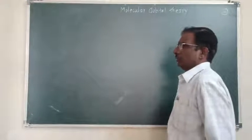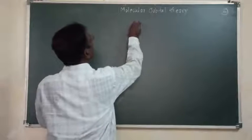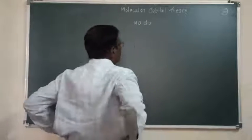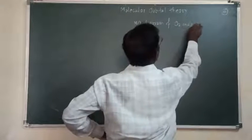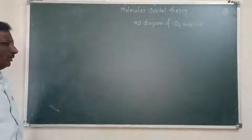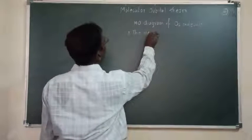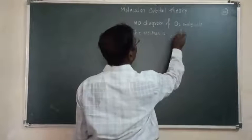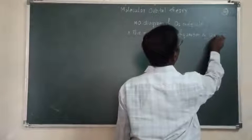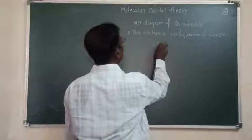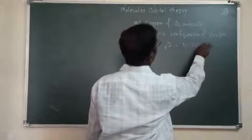Now, the last MO diagram of homonuclear diatomic molecule is that of oxygen — the MO diagram of O2 molecule. First, we have to write the electronic configuration of oxygen. The atomic number of oxygen is 8, and the electronic configuration is 1s2, 2s2, and 2p4.